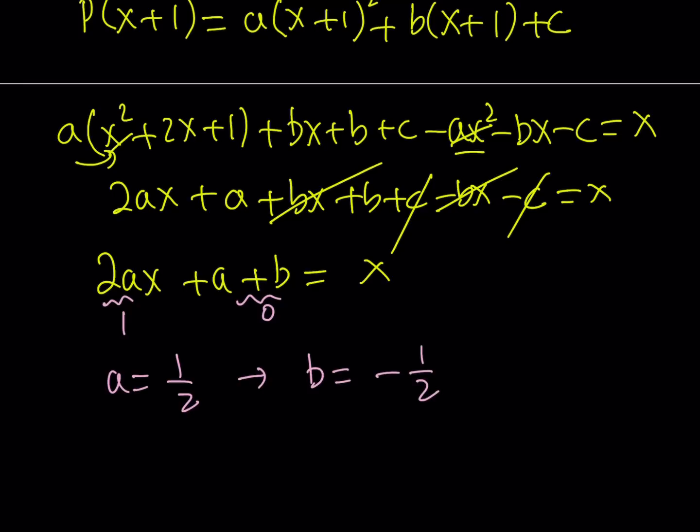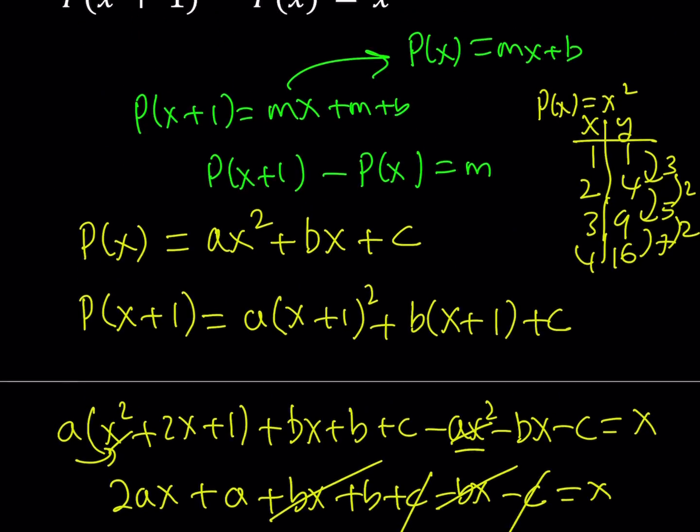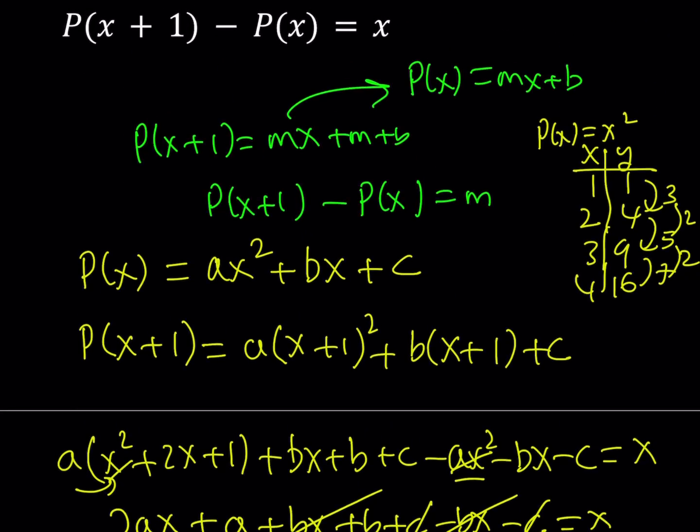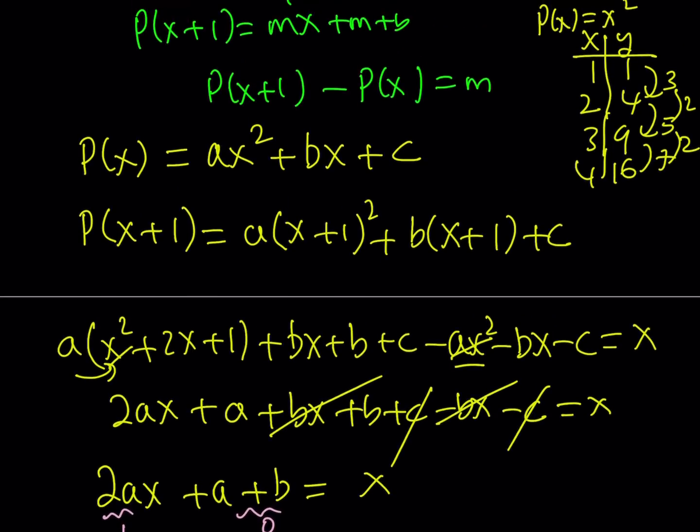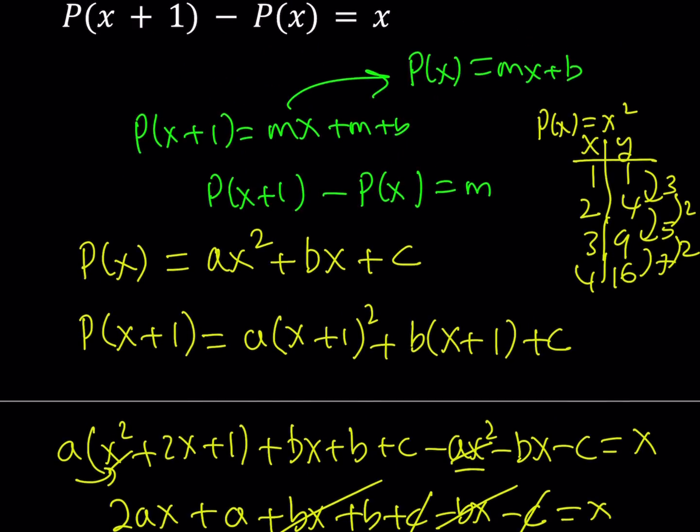But our goal is to solve for P of X. And we assume that P of X can be written as a quadratic. But notice that we don't really have any particular value for C here. We didn't get anything for C because C basically canceled out. What is that supposed to mean? What that means, C can be anything.